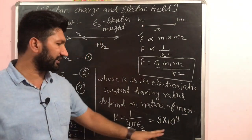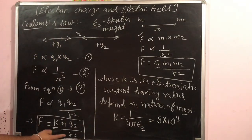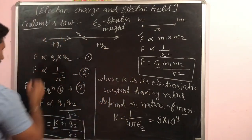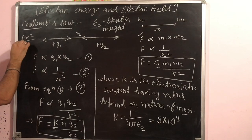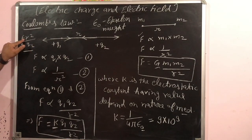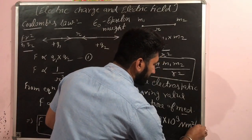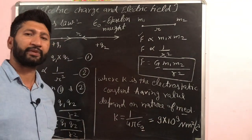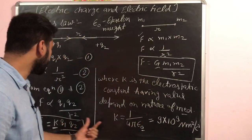To find the unit of k, you can derive it from the formula: k = F·R² / (Q1·Q2). The unit works out to be N·m² / C². So the value of k for free space is 9 × 10⁹ N·m²/C².